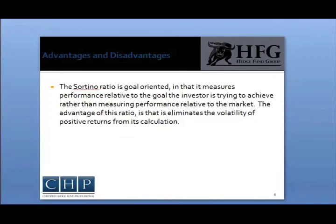The disadvantage of using this ratio is similar to the disadvantages of using the Sharpe Ratio in that not all asset returns are normally distributed. Anomalies like kurtosis, fatter tails, or skewness in the distribution can be problematic, as the standard deviation of negative returns does not eliminate this as a problem. Additionally, if negative volatility follows positive volatility, the investor could be unaware of issues if only looking at negative deviations.